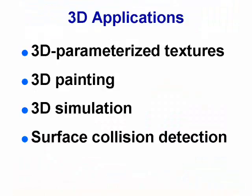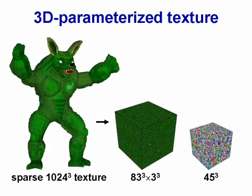We will now show some 3D applications of spatial hashing. Surface texture can be represented as a sparse 3D volume. Spatial hashing packs such data into a tight cube, making this approach practical.